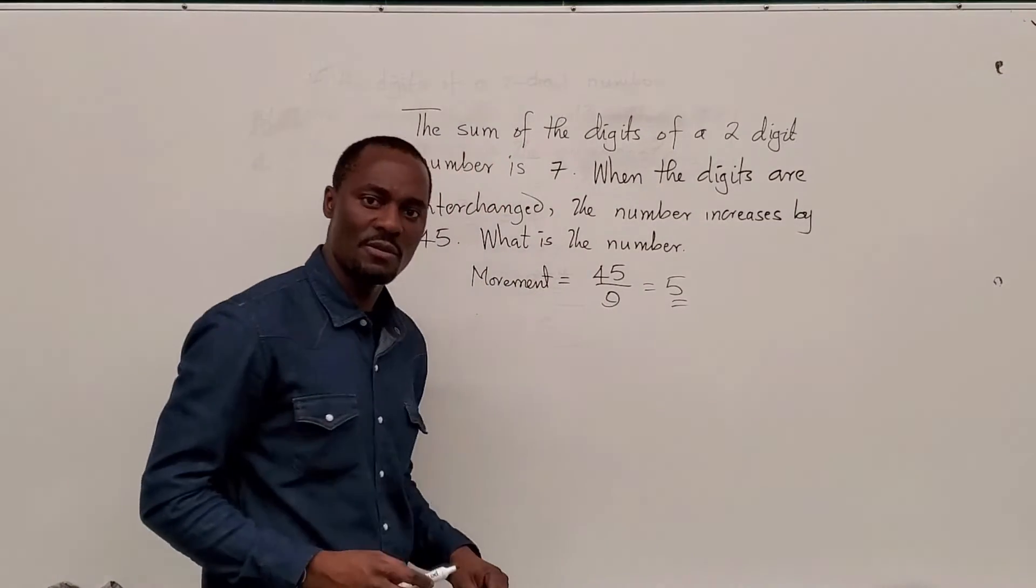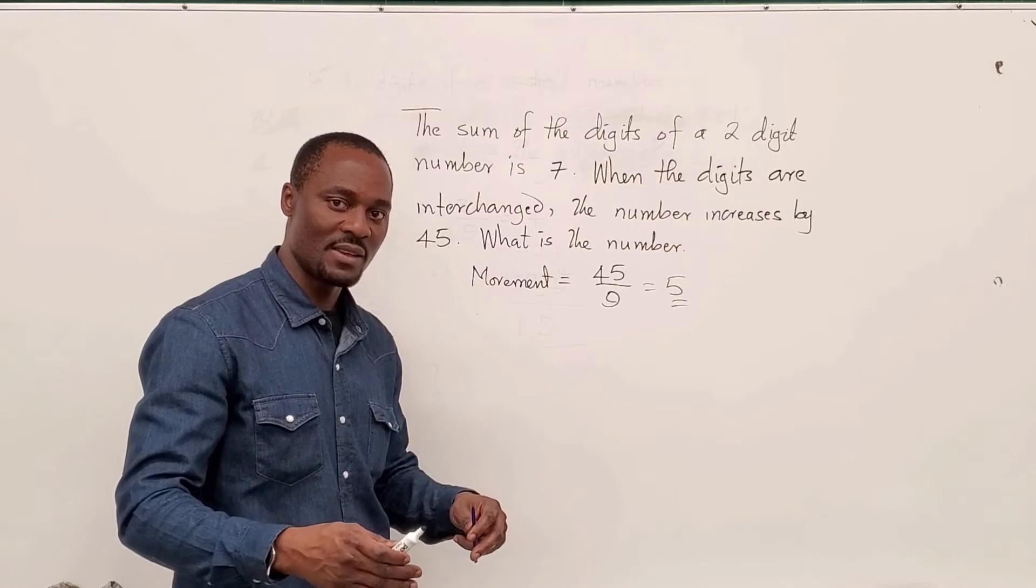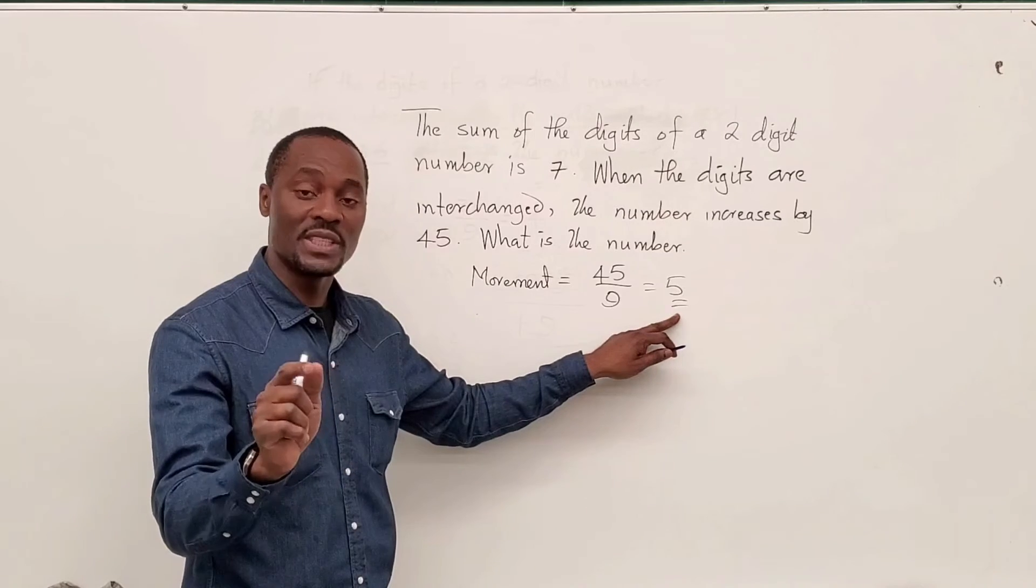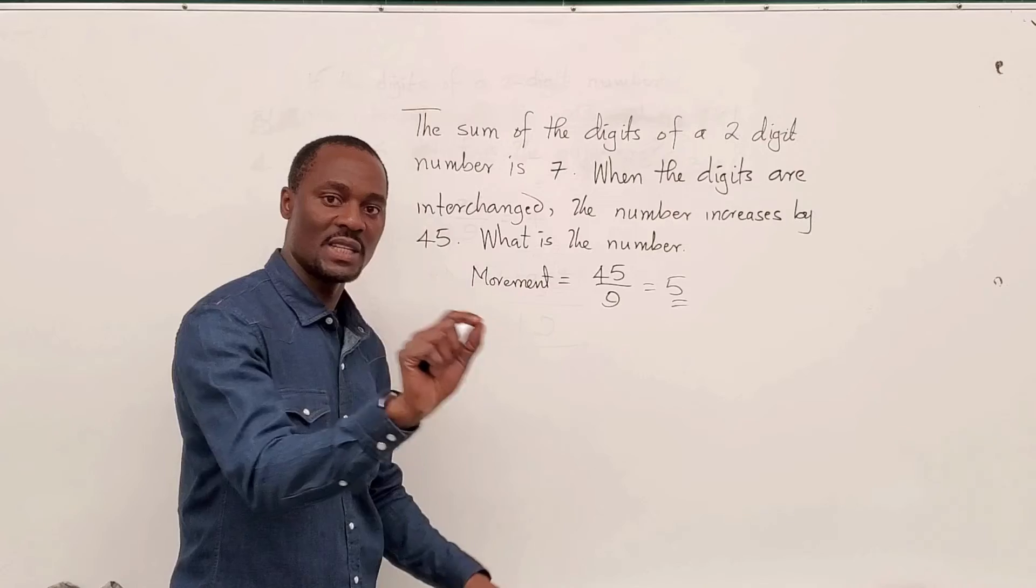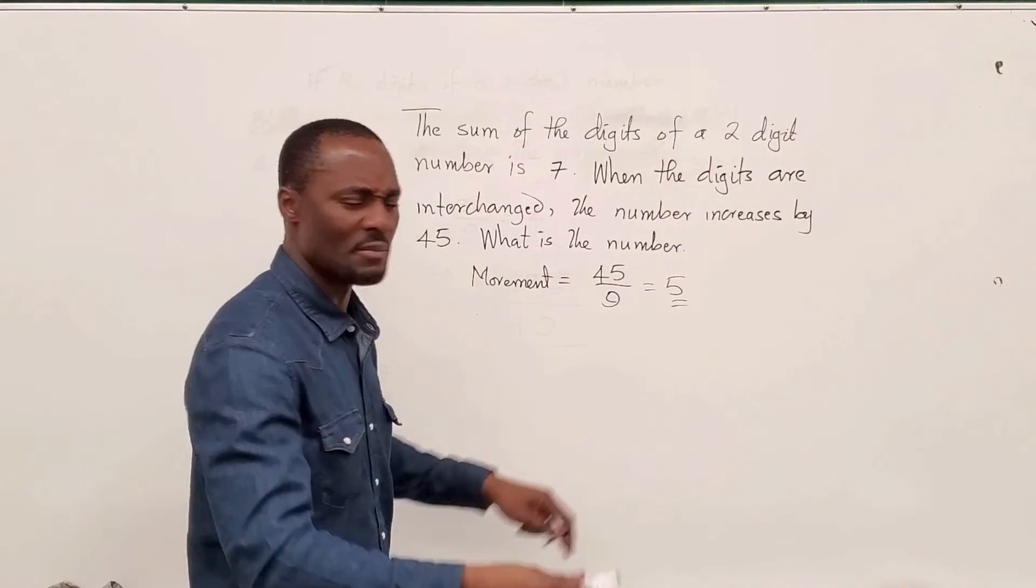You know what this five tells you? It tells you the number of steps you have to take to get to the other digit from the original digit. So, give me a combination of numbers or digits, rather, for a two-digit number that the difference between the first digit and the second digit will be five. That's the secret to this.